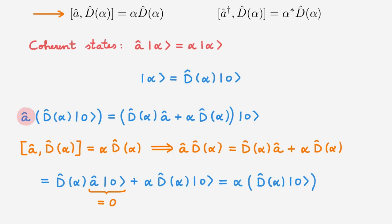The lowering operator kills the ground state, so we end up with α multiplying D(α)|0⟩. We therefore see that A acting on this state gives the scalar α times the same state, confirming that D(α)|0⟩ is an eigenstate of the lowering operator with eigenvalue α. This relation is an alternative but equivalent definition for coherent states — we could define a coherent state in terms of the displacement operator, and then derive that it is an eigenstate of the lowering operator.